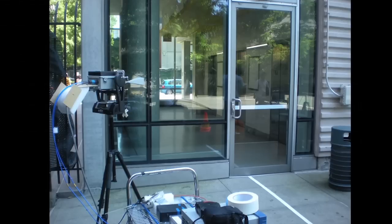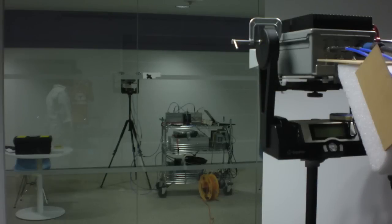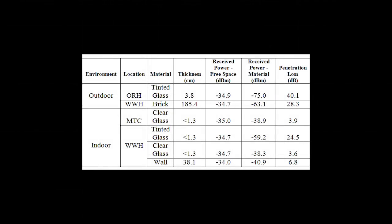Our building penetration tests show that tinted glass is highly reflective with 80% of power being reflected. Concrete and brick showed similar reflectivity. Drywall and non-tinted glass a few centimeters thick had small penetration losses of 6.8 and 3.6 dB with moderate reflectivity, so indoor access points may be needed when users enter a building.